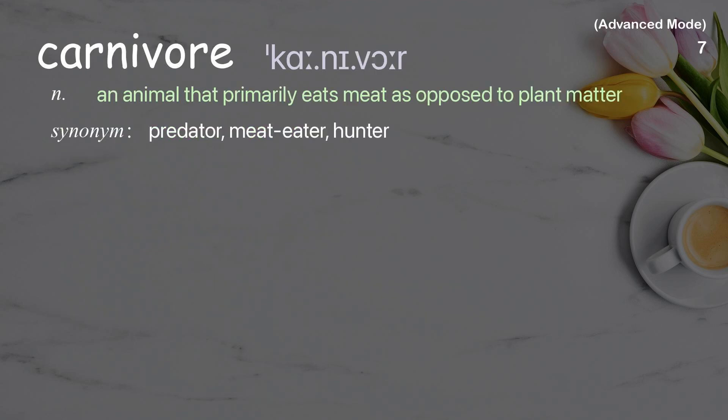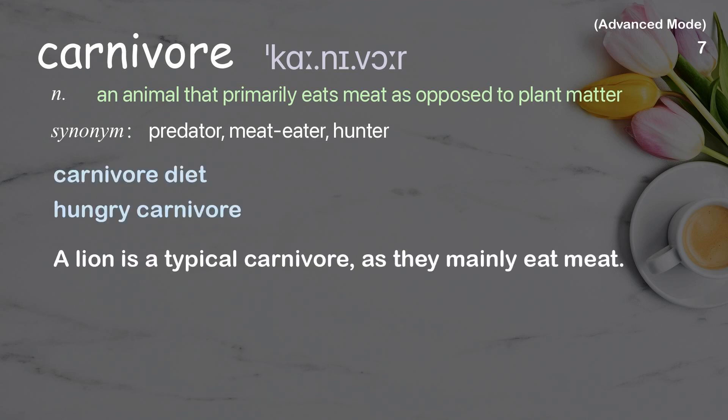Carnivore: An animal that primarily eats meat as opposed to plant matter. Examples: carnivore diet, hungry carnivore. A lion is a typical carnivore, as they mainly eat meat.